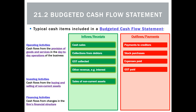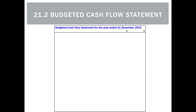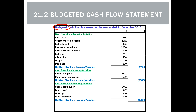The investing section is quite simple — inflows occur when we sell non-current assets, and outflows occur when we buy more non-current assets. In financing, loans and capital contributions from the owner are inflows, while paying back loans and cash drawings by the owner are outflows. We total up each section, writing net cash flow from operating, investing, and financing activities, then calculate the net increase or decrease in cash for the period.